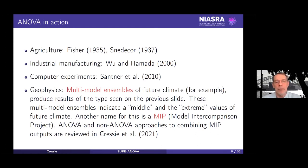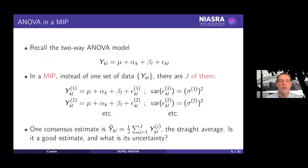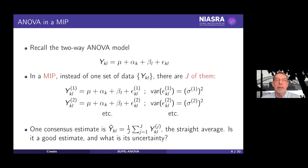These approaches are reviewed in a paper being put up on archive within the next week or two. Recalling this two-way ANOVA model — very simple, no interaction — in a MIP, instead of having one set of data, we actually have capital J sets of data. In the example I showed you, J was 42. The question is: what are we going to do about having 42 observations?